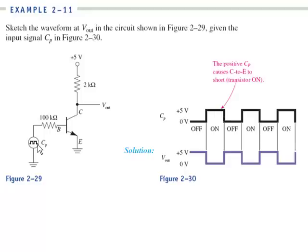When it's plus five that's going to turn on the transistor. This is a short and V out will be connected directly to the emitter or ground. So V out will be zero. So when this is high the output is zero.